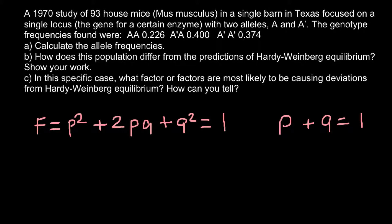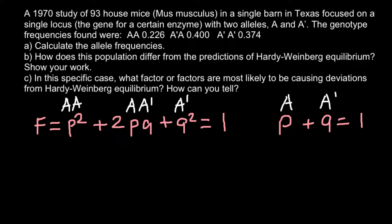According to our problem we have two alleles A and A'. In our formula, A is equivalent to allele P and A' is equivalent to allele Q. These two alleles make three genotypes in diploid organisms: P² stands for AA, 2PQ stands for AA', and Q² stands for A'A'.